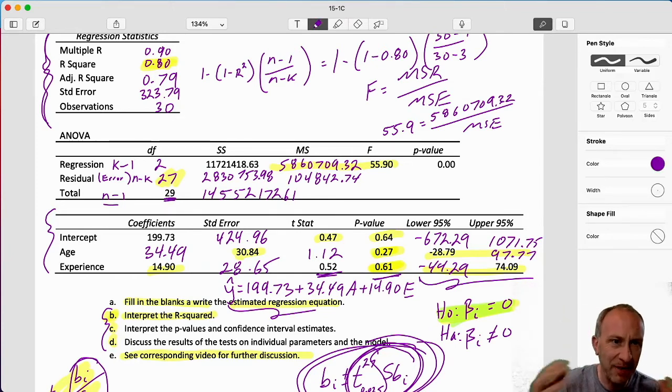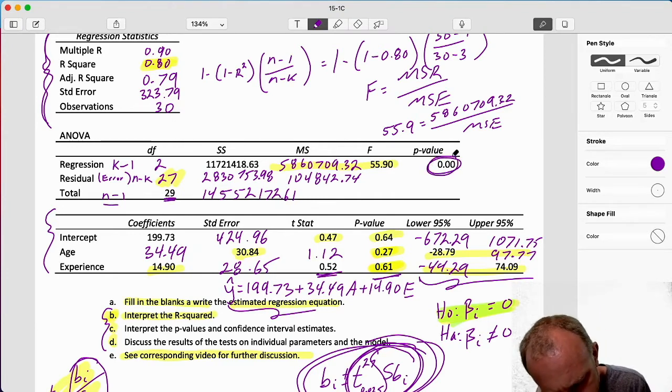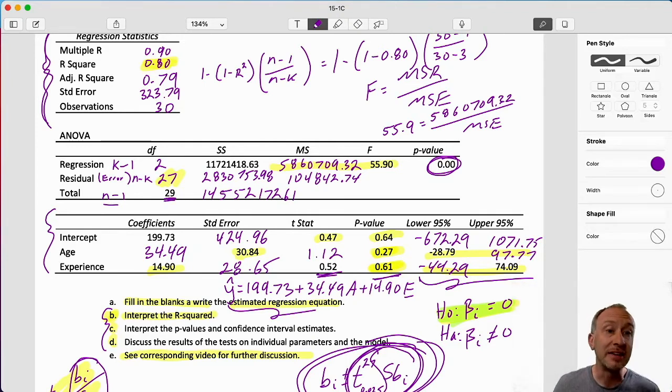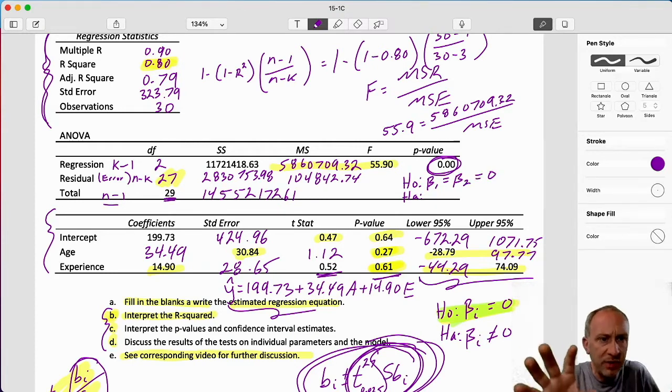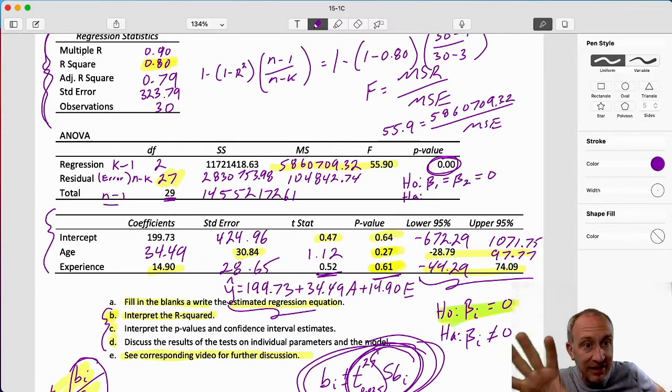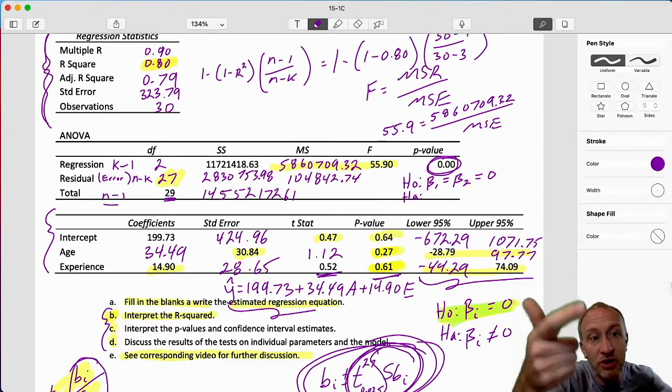Now, why am I emphasizing that so much? Because look at this one. That f test is showing us that together, our coefficients are statistically different from zero. Remember what that test looks like. That null is that beta one is equal to beta two is equal to zero.